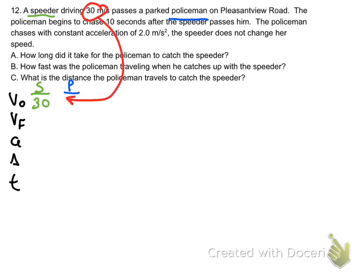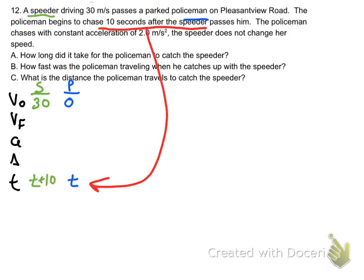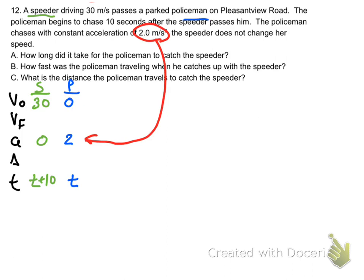The speeder's initial velocity starts the problem moving 30 meters per second, and the police car is parked, so its initial velocity is 0. The speeder goes 10 seconds while the police car is waiting to chase, so the speeder gets t plus 10 while the police car just gets t. The police accelerates at 2 meters per second squared, and the speeder's acceleration is zero.